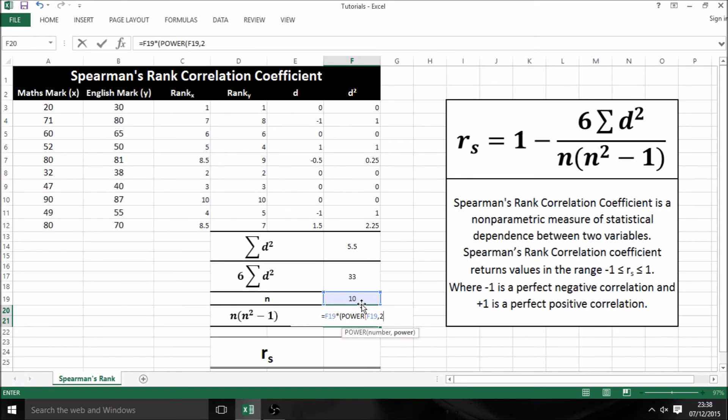Then close my brackets, take away 1, and close this bracket. Essentially what I'm doing here is 10 times open brackets, 10 squared minus 1, close brackets. Then hit enter, and we get a value of 990.